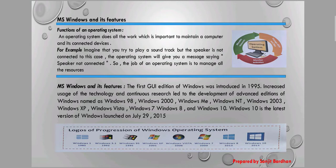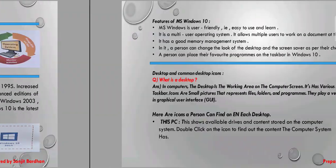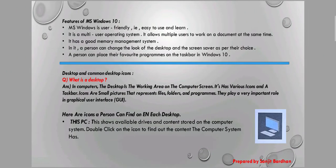Here you can see the logos of Windows. This picture is also in your book — you can look at the images to know the different versions of Windows. Next is the features of MS Windows 10.